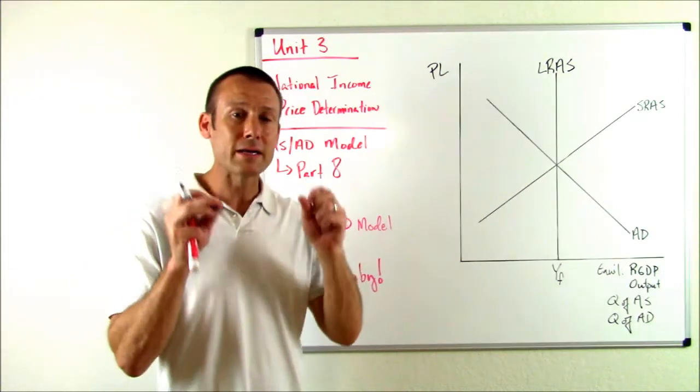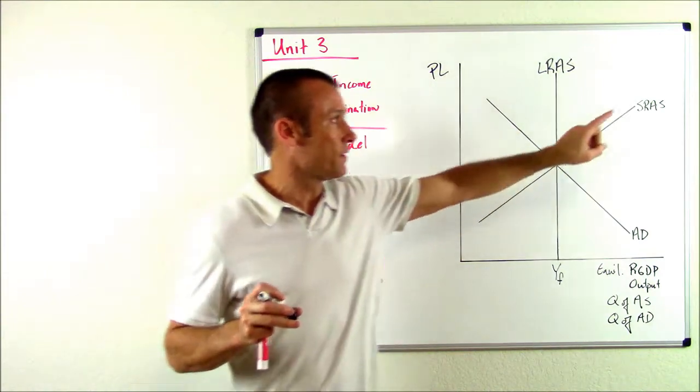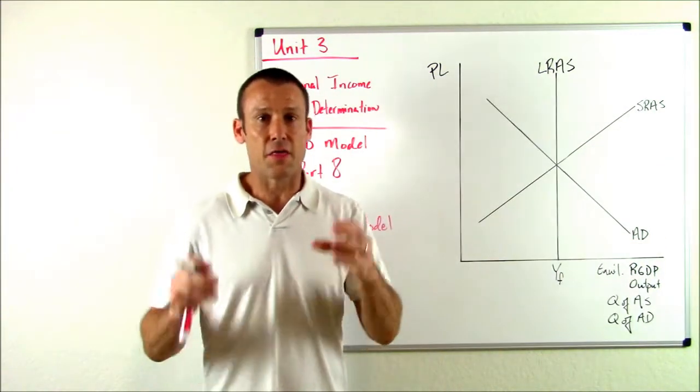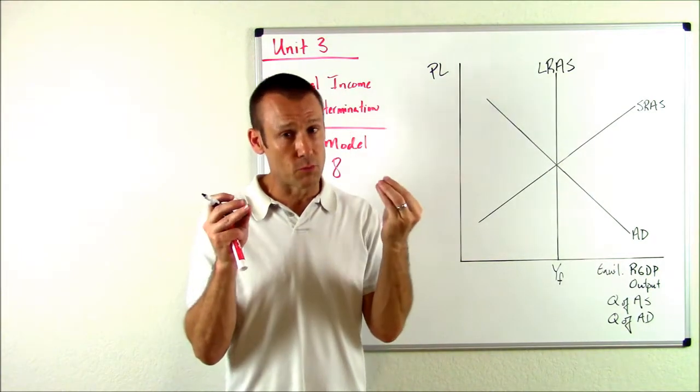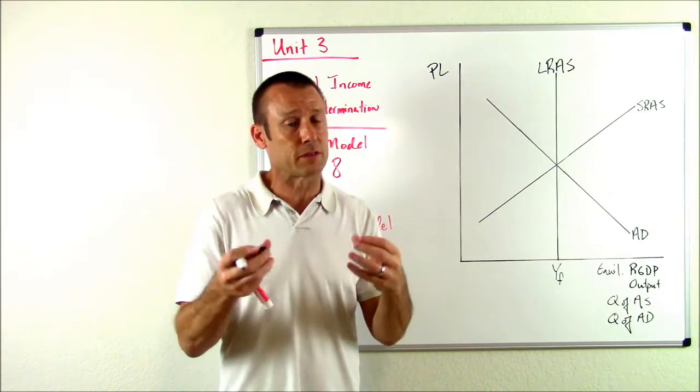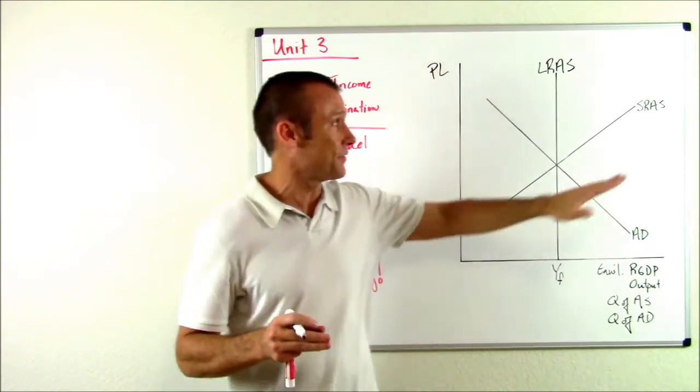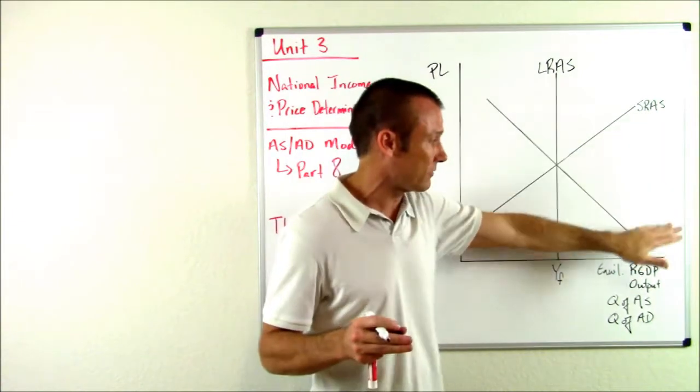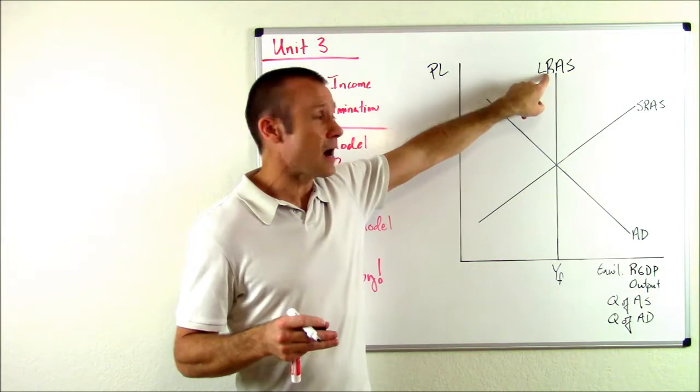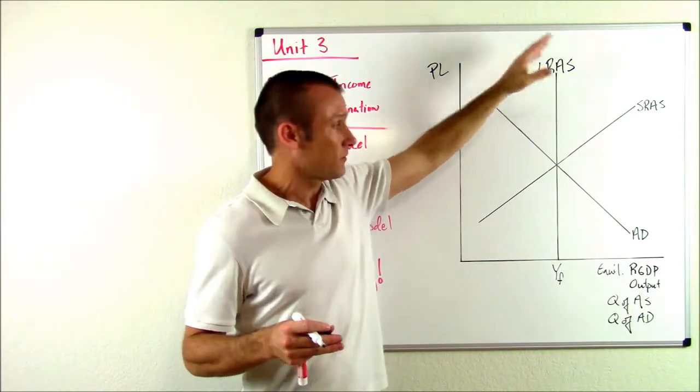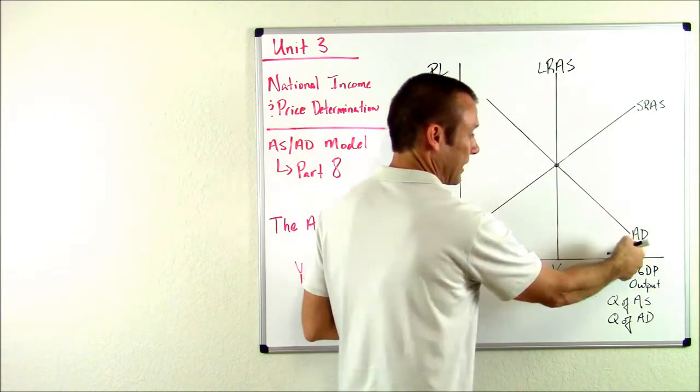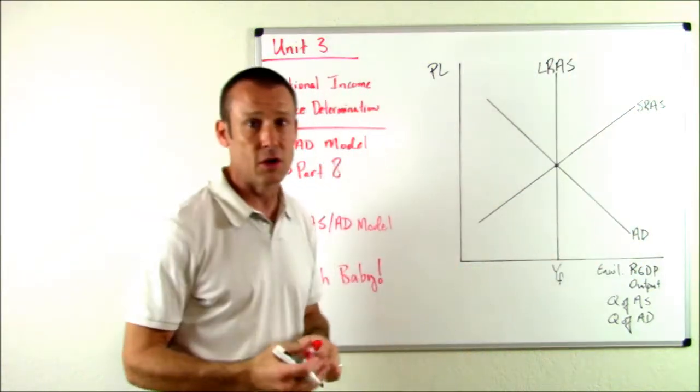Now next big thing that we get down: where is the economy? The economy is where the SRAS curve and the AD curve intersect. That's where the economy is at, or at least that's where the economy is moving towards. For all intents and purposes we can just go ahead and say the economy is at the intersection point of SRAS and AD, or that's at least what we're moving towards. We are not always on the LRAS.